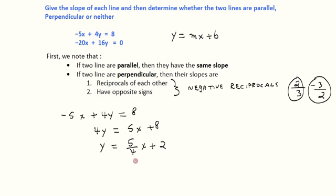We get y equals 5 over 4x plus 8 over 4, which is 2. We're not that interested in the 2. What we're interested in is the slope. The slope of this line is 5 over 4, the slope of the first line.